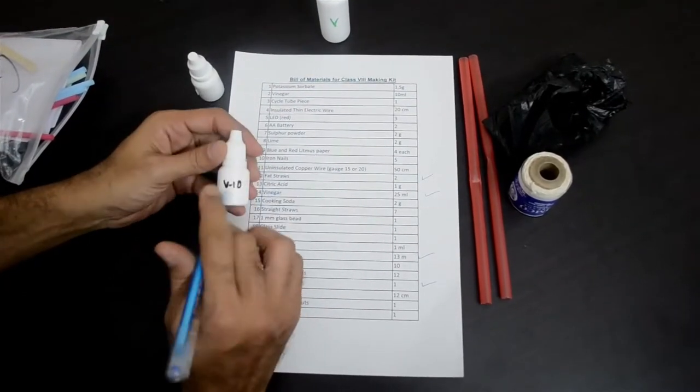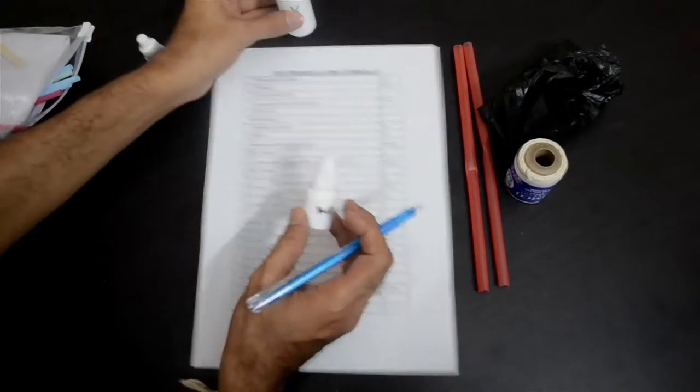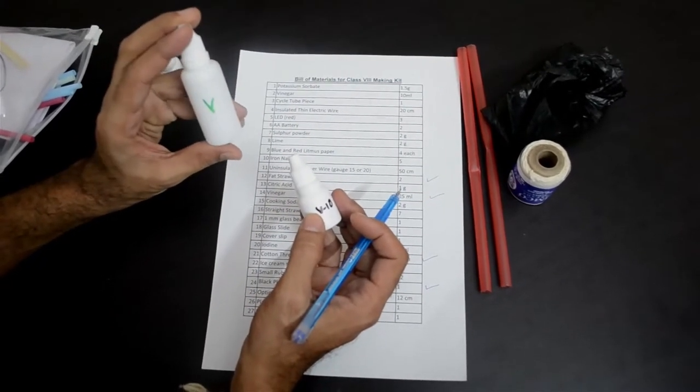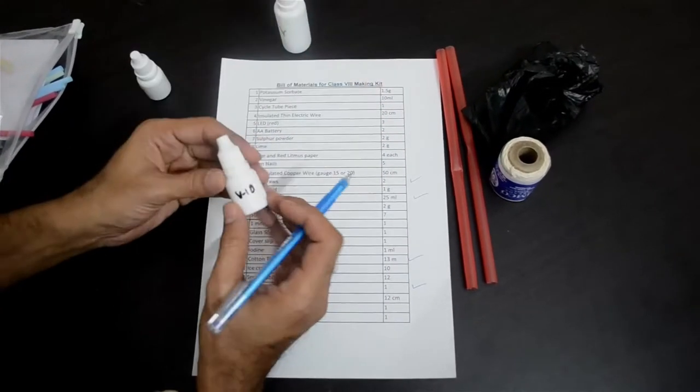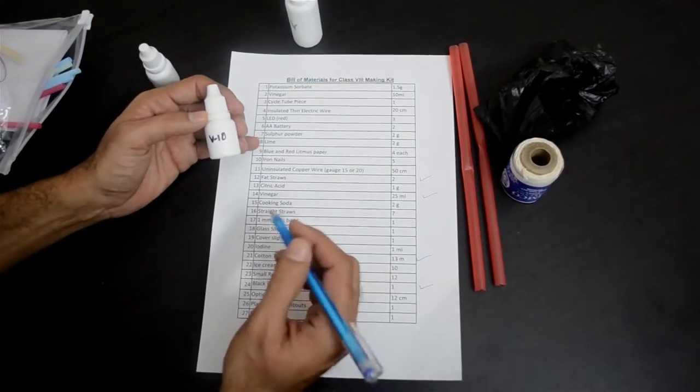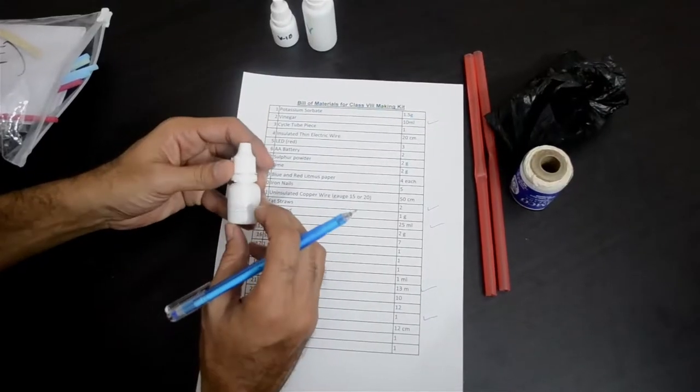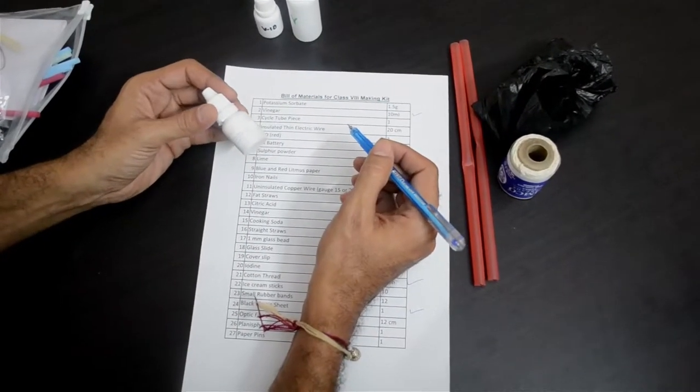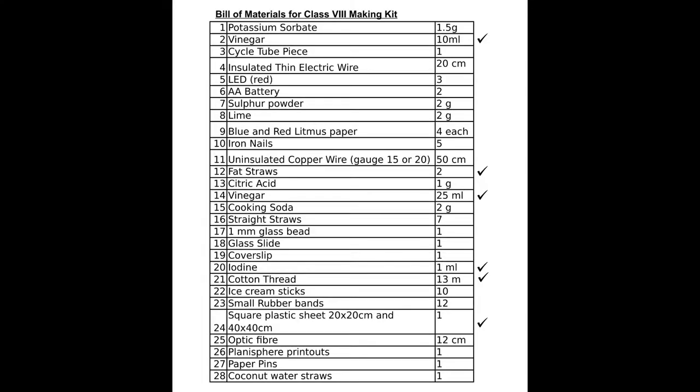Then another smaller bottle labelled as V-10, which is vinegar but 10 ml. We have these two separate bottles because for one of the activities you will require the full 25 ml vinegar for the soda and vinegar experiment, and the 10 ml vinegar you will require for conducting the litmus test. So the 10 ml vinegar is item number 2 in our list. Two bottles of vinegar, two different sized bottles. And also a small bottle labelled as iodine. You will require this for staining the onion peel to view the cells through the microscope. Item number 20 in our list.